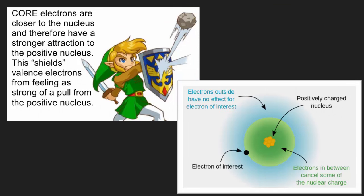Core electrons are closer to the nucleus and therefore have a stronger attraction to the positive nucleus. This shields the valence electrons from feeling as strong of the pull from the positive nucleus. This is what we call shielding effect, where the inner electrons just block that positive charge from the outermost valence electrons.